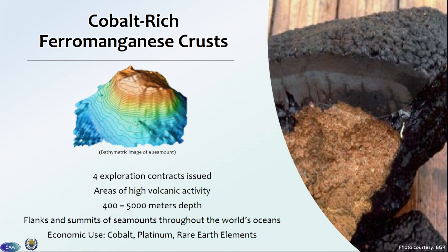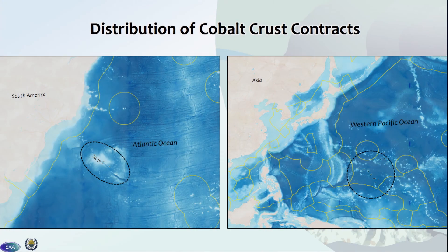Our last mineral environment are cobalt-rich ferro-manganese crusts. These occur in areas of high volcanic activity at shallower depths between 400 and 5,000 meters, on the flanks and summits of seamounts throughout the world's oceans. Their economic uses are cobalt, platinum, and rare earth elements. The ISA has estimated that only a few of the 30,000 seamounts estimated throughout the western Pacific Ocean have actually been sampled and mapped in detail. There are some contracts in the Atlantic Ocean and in the western Pacific Ocean — you can see all those seamounts dotted throughout the western Pacific.